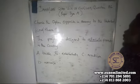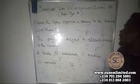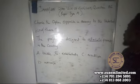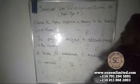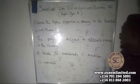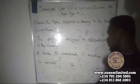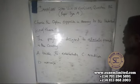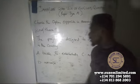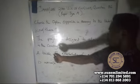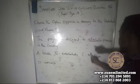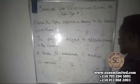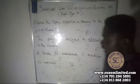The question says: choose the option opposite in meaning to the underlined word. The project is designed to alleviate poverty in the country. A. Tackle, B. Exacerbate, C. Eradicate, D. Assuage.